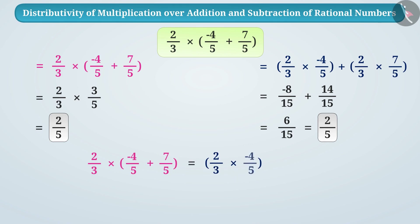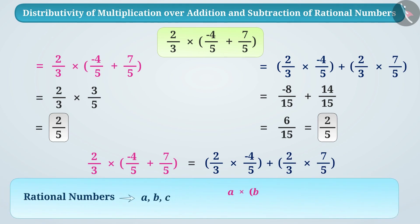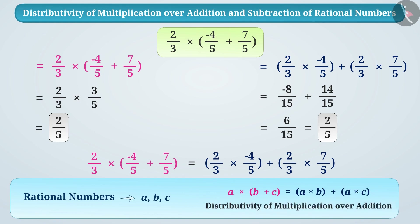So we can say that 2/3 × (−4/5 + 7/5) = 2/3 × (−4/5) + 2/3 × 7/5. In general, for any three rational numbers a, b, c: a × (b + c) = a × b + a × c. This is called distributivity of multiplication over addition.